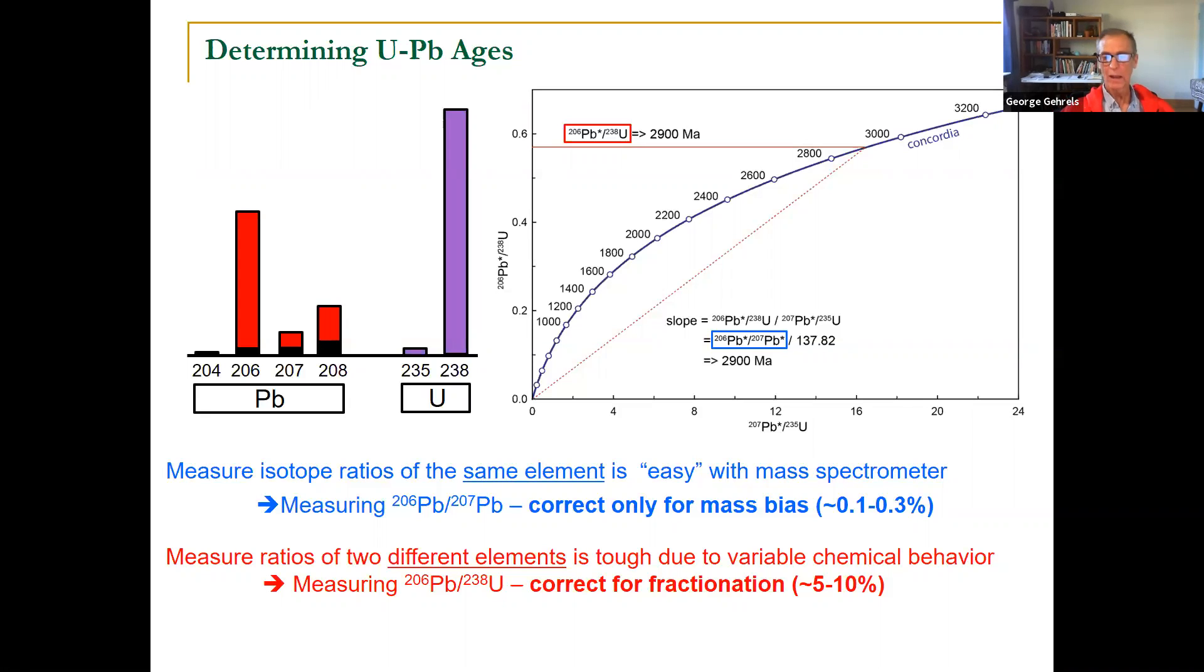Just a slight difference in mass. So the measured value off the mass spectrometer, 206-207, is very close to the true ratio. You might have to do a correction of a tenth of a percent or a third of a percent. We call this the mass bias correction.